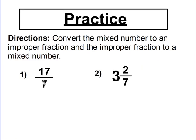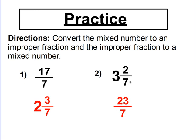Try this: change number 1 into a mixed number, and change number 2 into an improper fraction. For question 1, divide 17 by 7 — 7 goes into 17 two times with a remainder of 3, so the answer is 2 and 3 sevenths. For question 2, multiply 7 times 3 to get 21, then add 2 to get 23. The denominator stays 7, so the answer is 23 over 7.